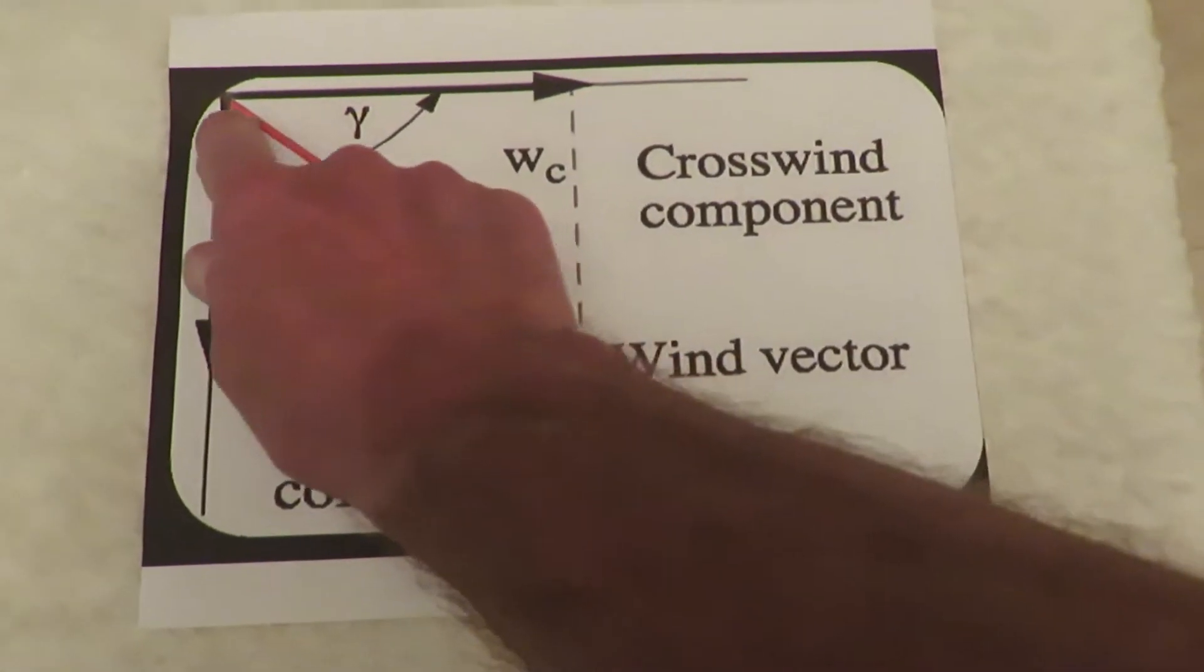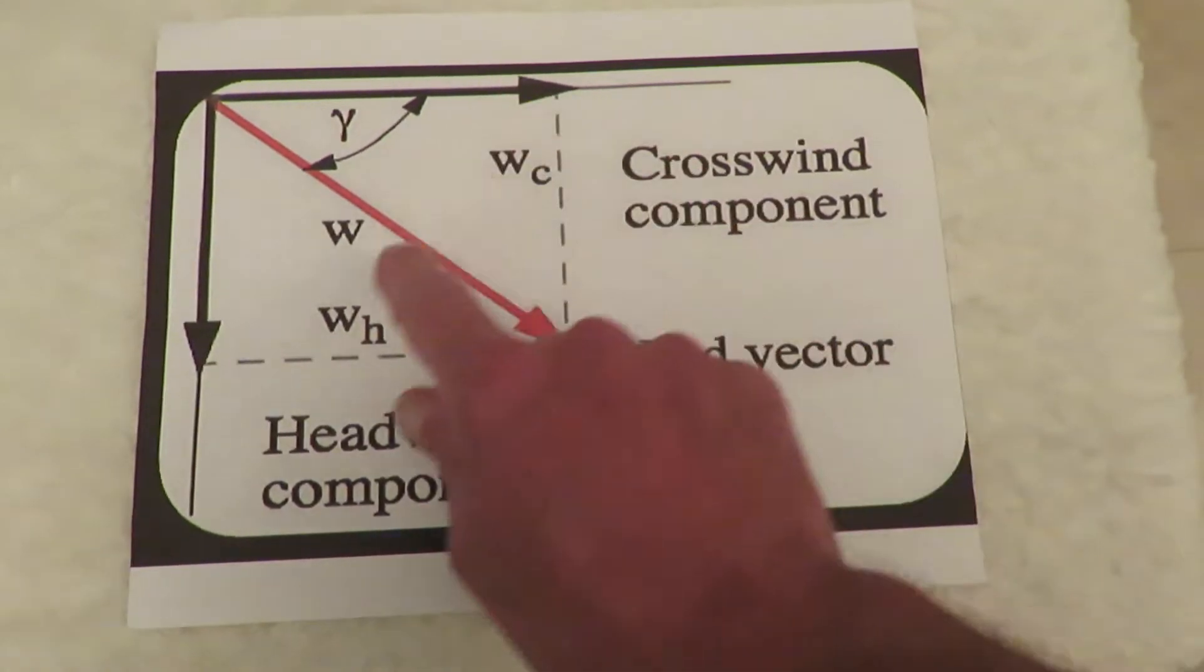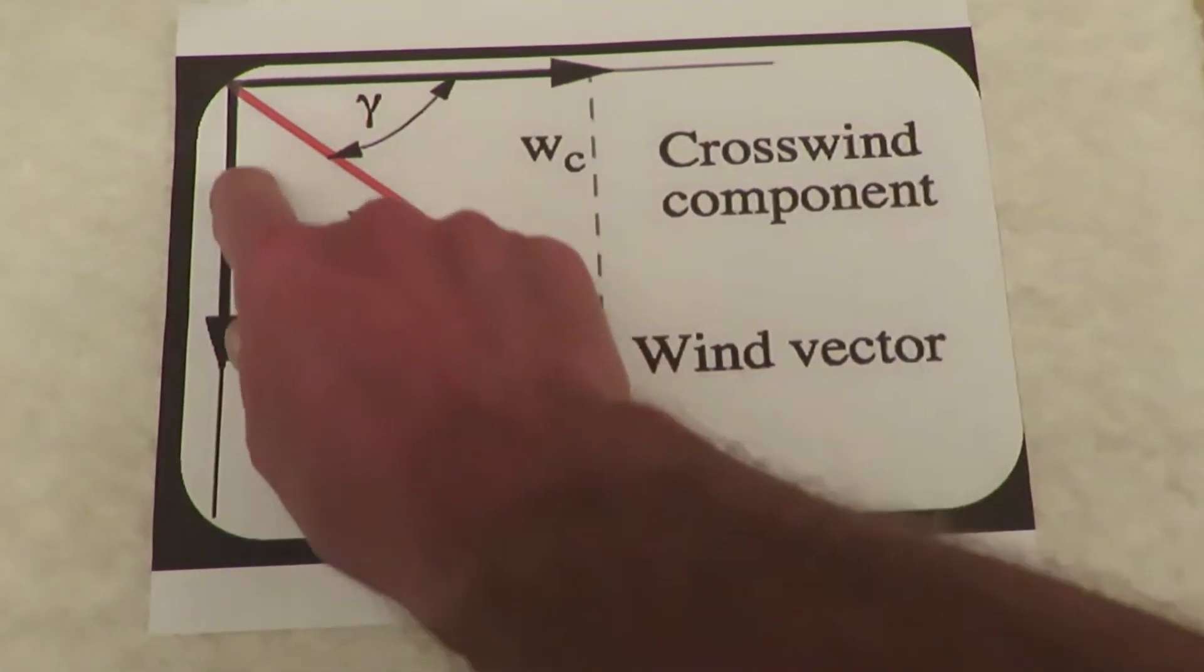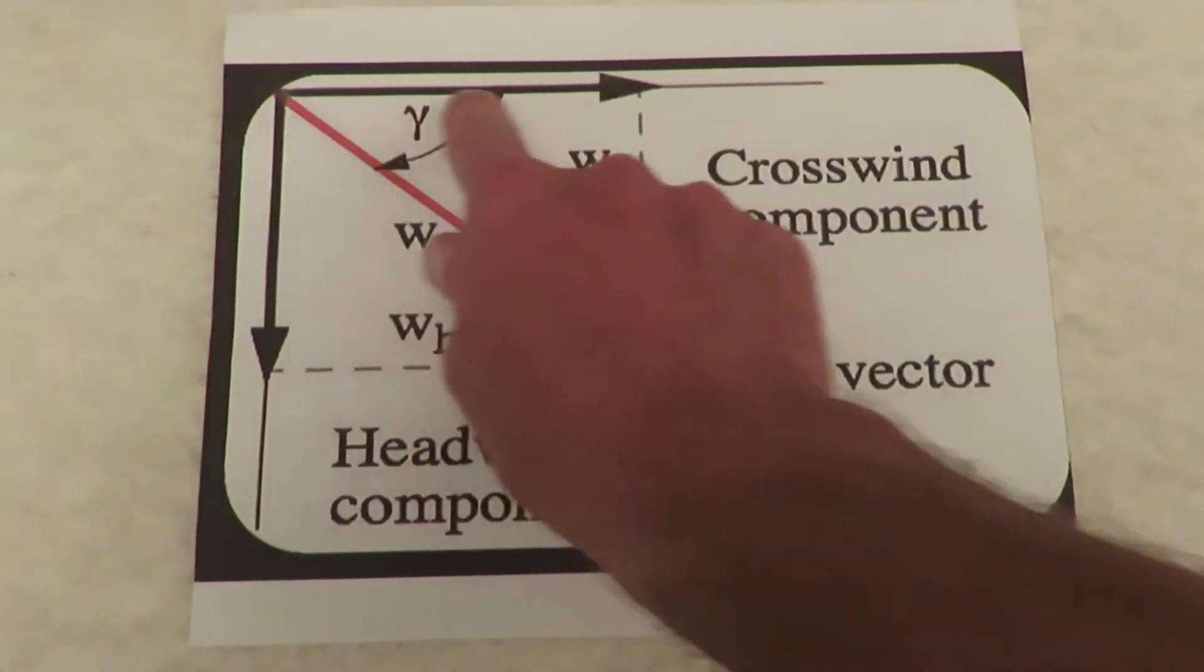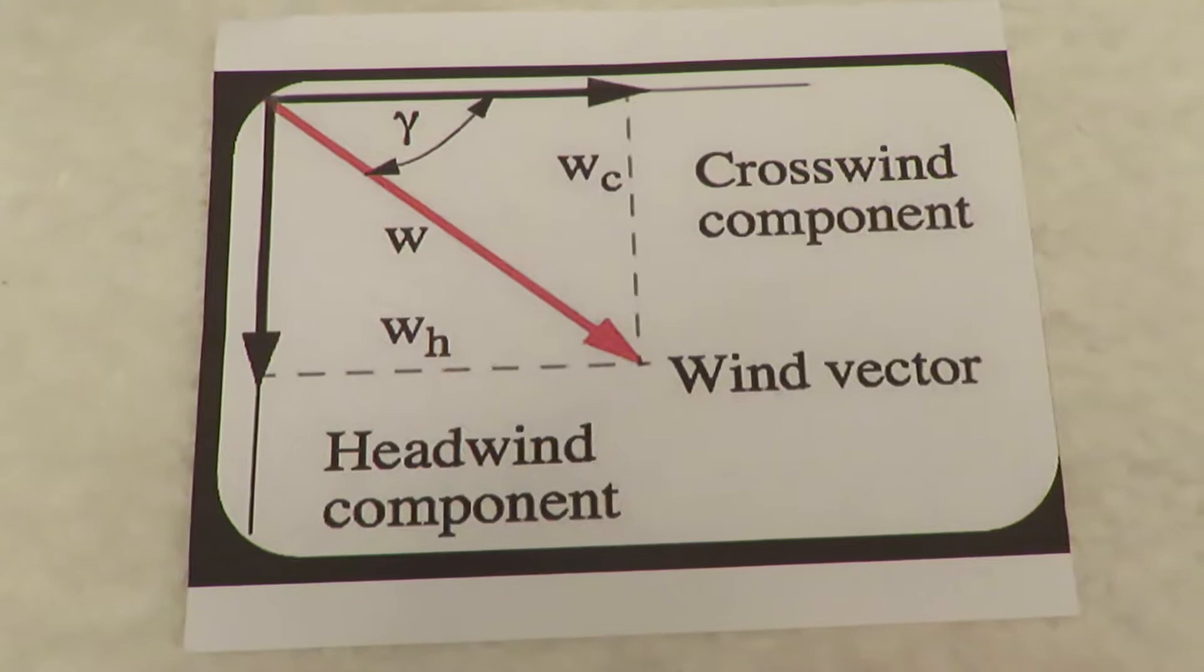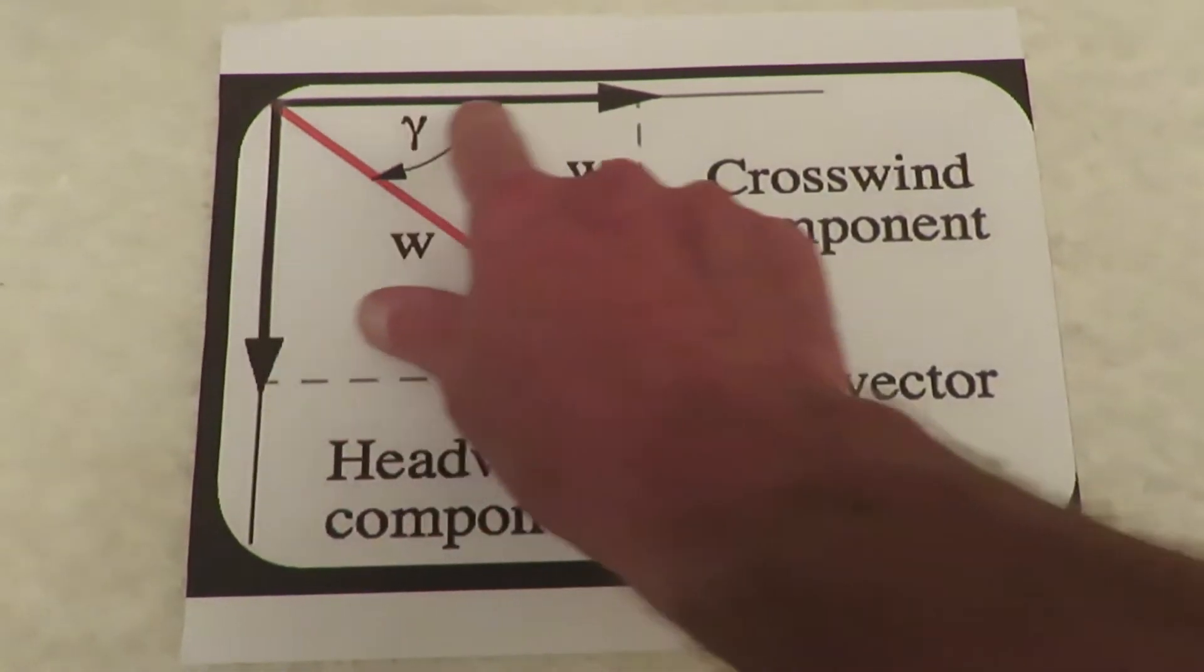All other winds will have a crosswind component. The wind vector consists of a headwind or tailwind component vector and a crosswind component vector. The drift angle is determined to counter the effects of the crosswind vector.